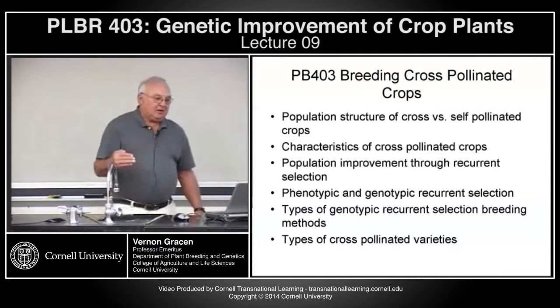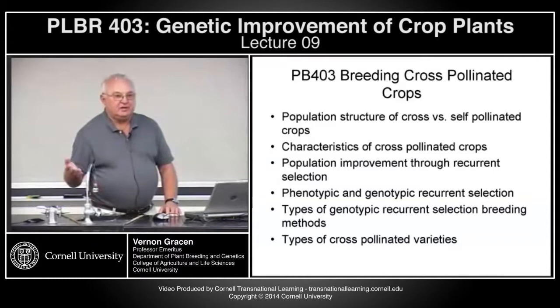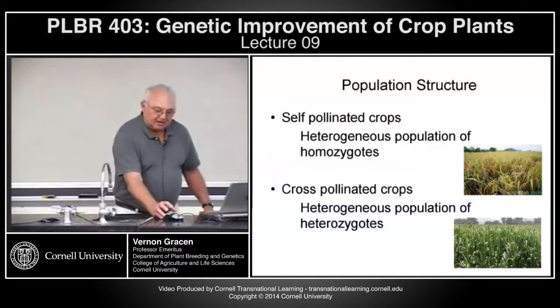Then finally on Friday, we'll talk about breeding hybrids, which historically has been a type of variety for cross-pollinated crops. But for the last ten or more years, with sorghum and rice, hybrids have also been developed and utilized in self-pollinated crops.